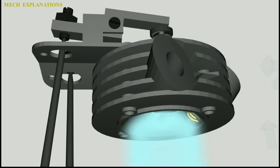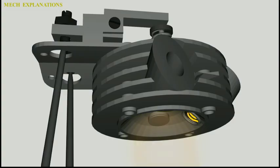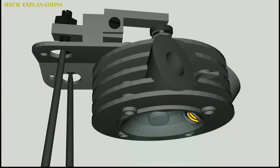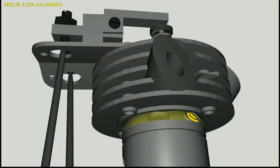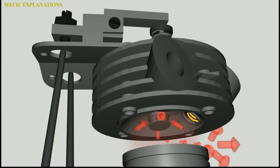When the camshaft lobe raises the outside of the arm, the inside presses down on the valve stem, opening the valve. When the outside of the arm is permitted to return due to the camshaft's rotation, the inside rises, allowing the valve spring to close the valve.